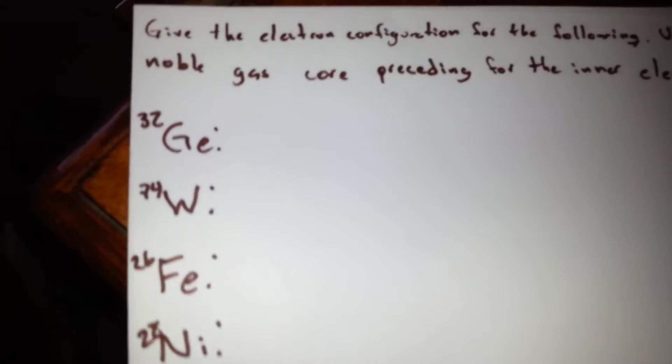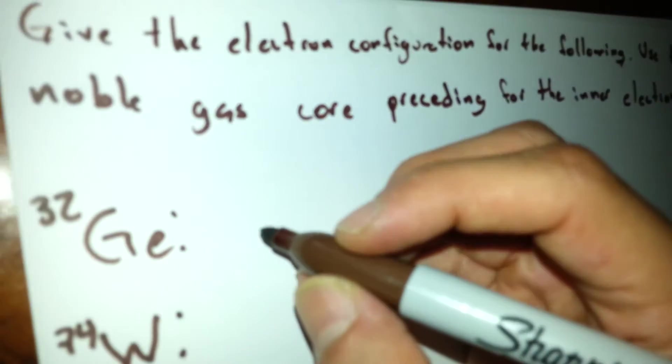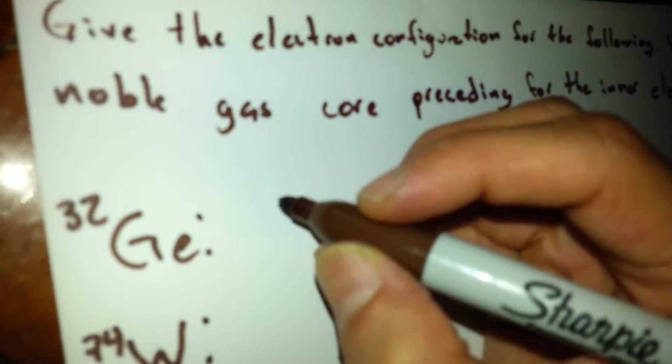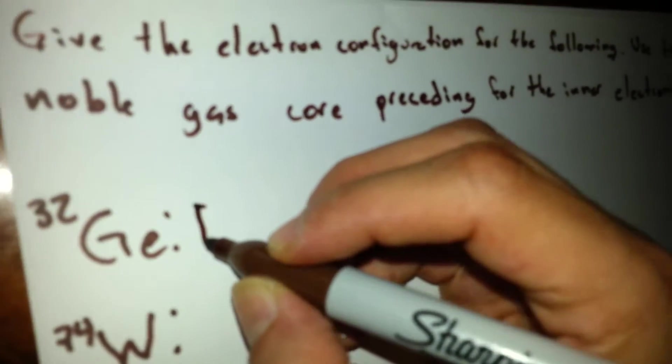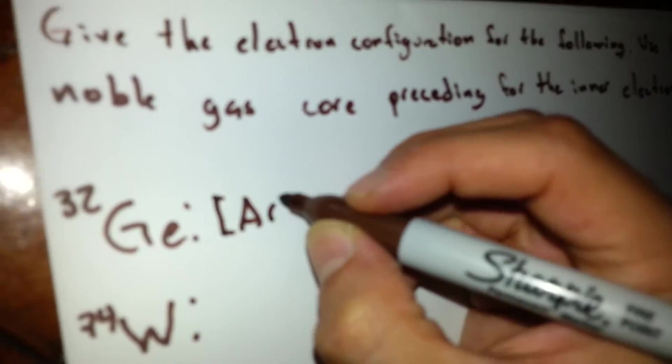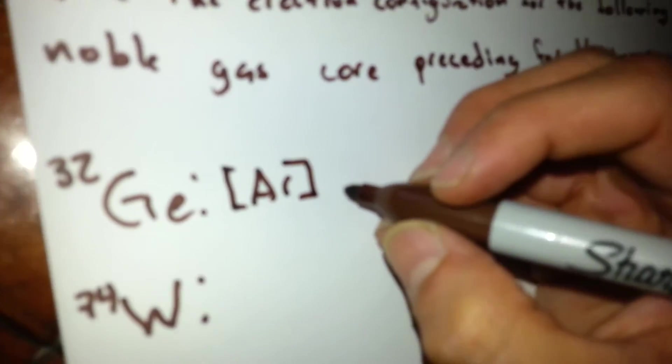We have a total of six, and what we do first is get the number of electrons on each. We begin with germanium-32. For this one, the noble gas core we utilize is argon. From then,